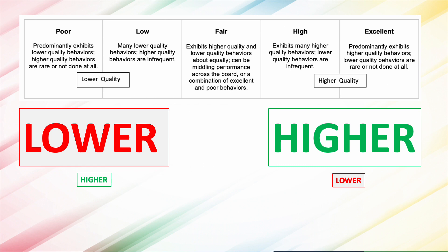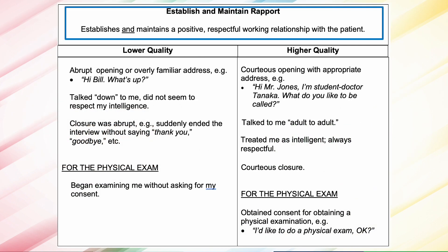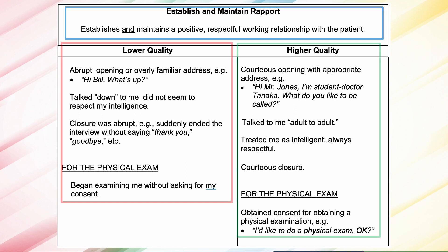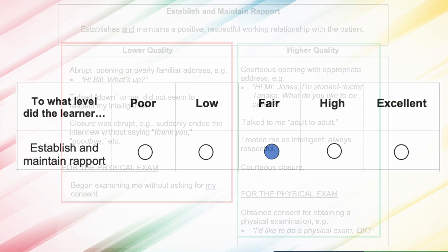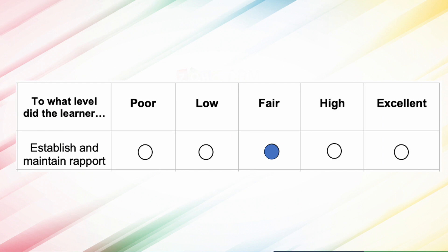As with the English proficiency ratings, you'll score the learner from poor to excellent. When scoring, first you want to consider the dimension definition. Next you'll consider the lower and higher quality behaviors, which are essentially things to look for. The low and high quality skills listed are not exhaustive — the learner may do other lower or higher quality behaviors that you need to take into consideration. You then want to rate each communication dimension separately, taking into account the dimension definition and the learner's lower and higher quality skills.